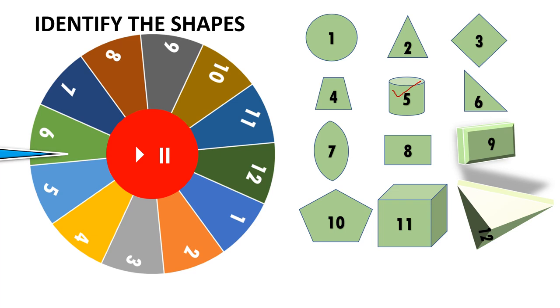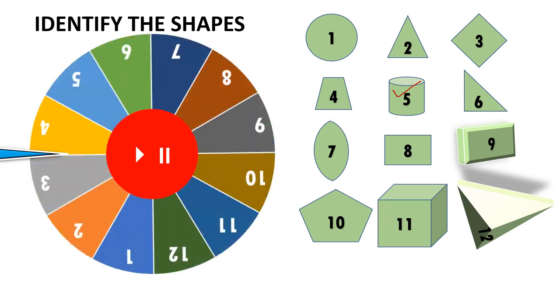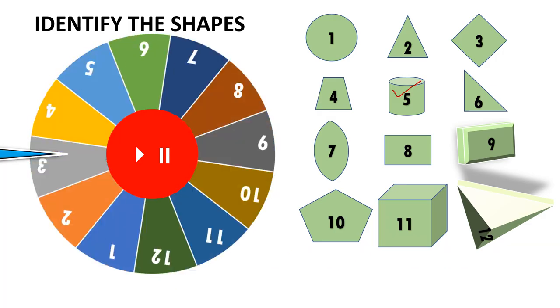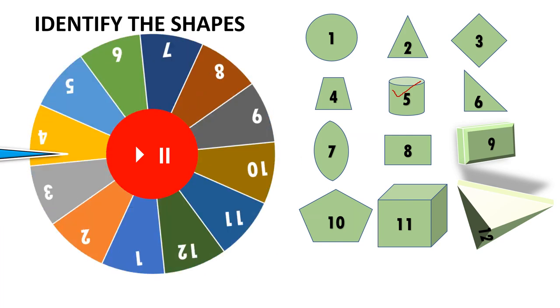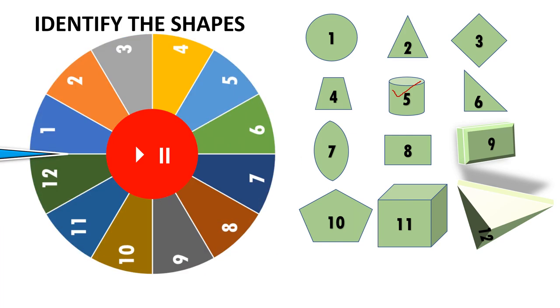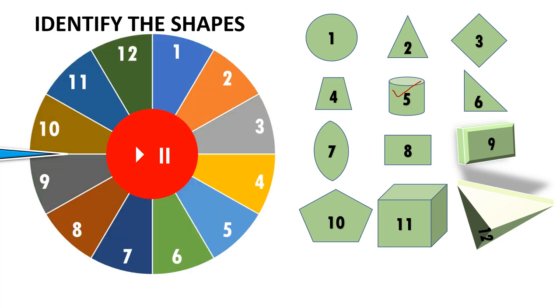You can make groups in the class and ask the child to identify. Then again, you can click on the wheel, play pause button and pause it. Now see, because the arrow is in between, we can take another turn.